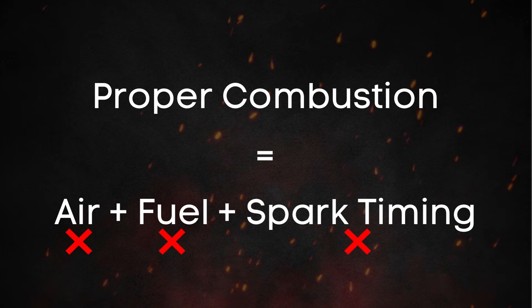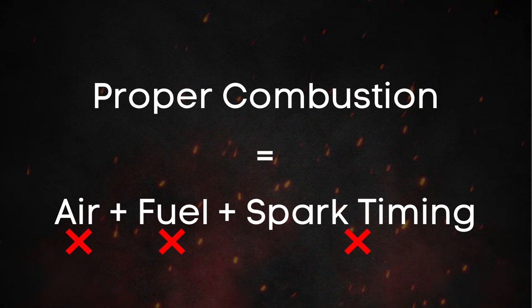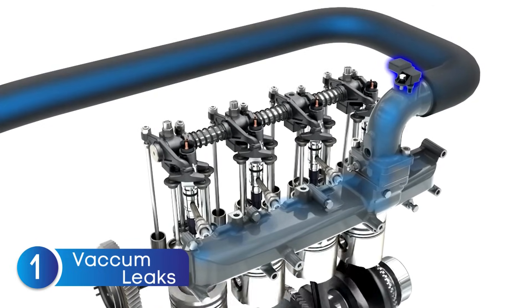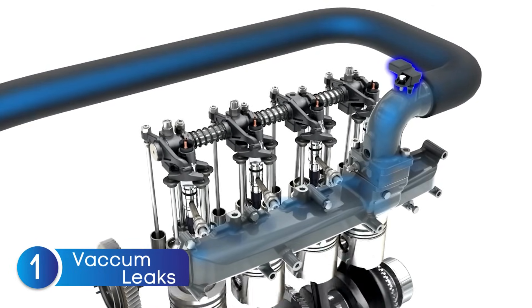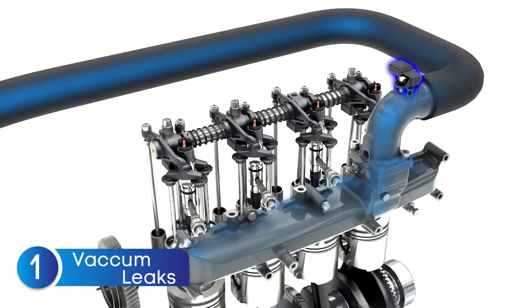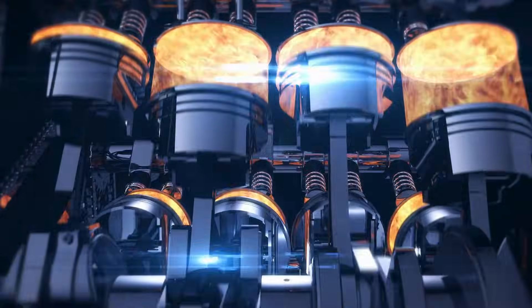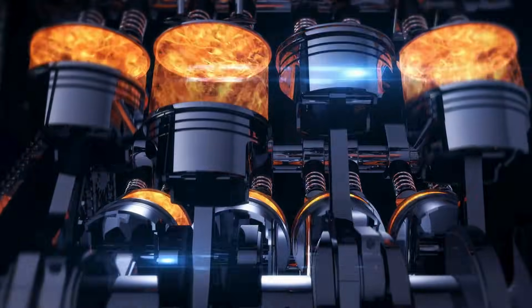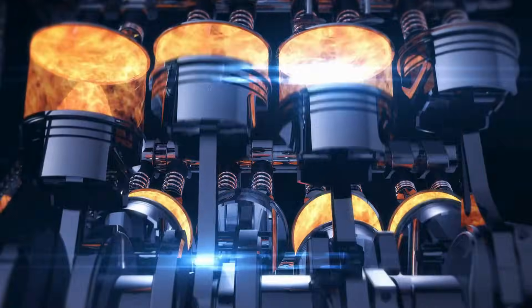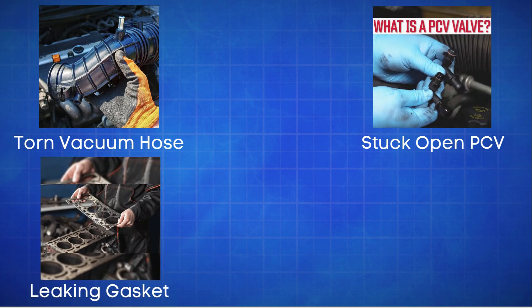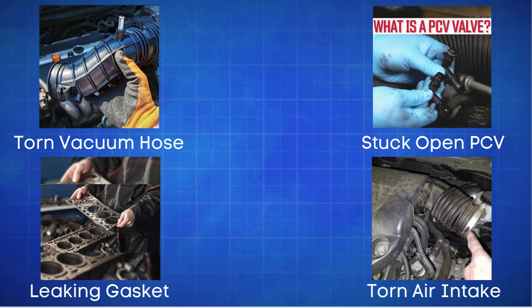Let's dive into some factors that can affect the air, fuel, or spark. First up, vacuum leaks. A vacuum leak allows unmetered air to enter the engine. This extra air throws off the air-fuel ratio, causing the mixture to run too lean, which leads to misfires. Some common locations for vacuum leaks include a torn vacuum hose, a stuck-open PCV valve, a leaking intake manifold gasket, or anything torn in the air intake system after the MAP sensor.